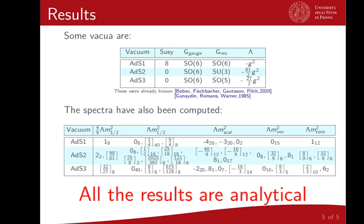We also produced the complete spectra of masses, which were unknown previously. For instance, there are 15 massless vectors in the first case, 8 in the second, and 10 in the last. This agrees with the residual gauge groups, which are SO(6), SU(3), and SO(5) respectively, with 15, 8, and 10 generators. All these results are analytical, thanks to the power of our technique, and we can compute exactly the mass spectra. Many new vacua have been found but not yet reported; they will appear in a future paper, so stay tuned.